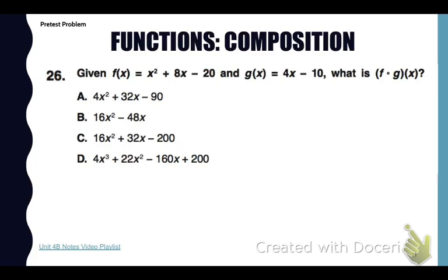Go to number 26 now in your pre-test packet. It says given these two functions, what is f of g of x? So we're composing. We're going to take what g(x) is, which is 4x minus 10, and we're going to place it into the f(x) function for x.